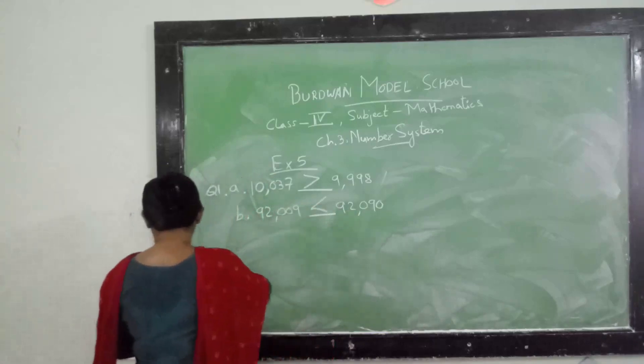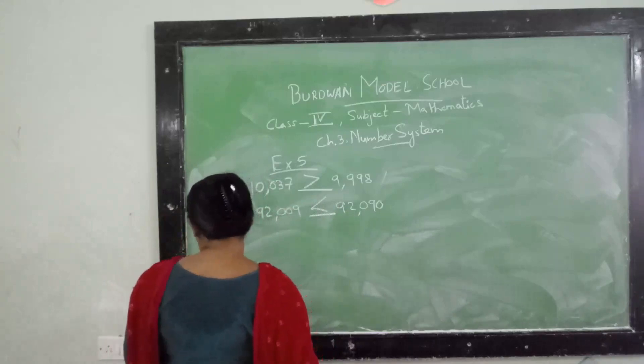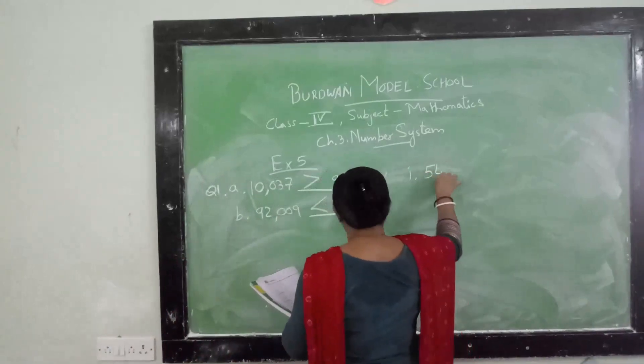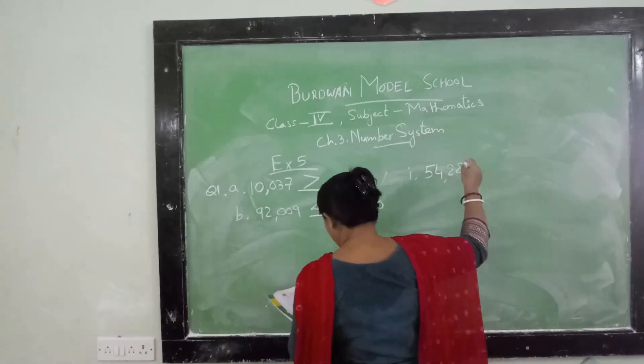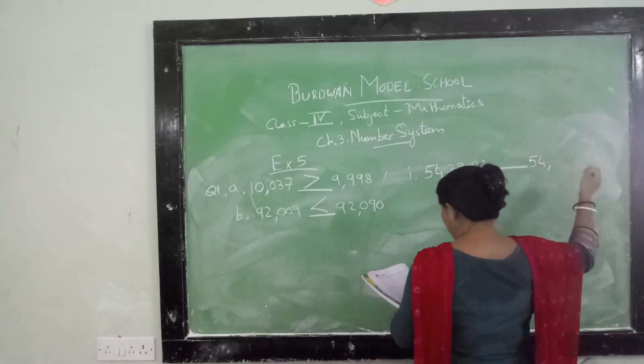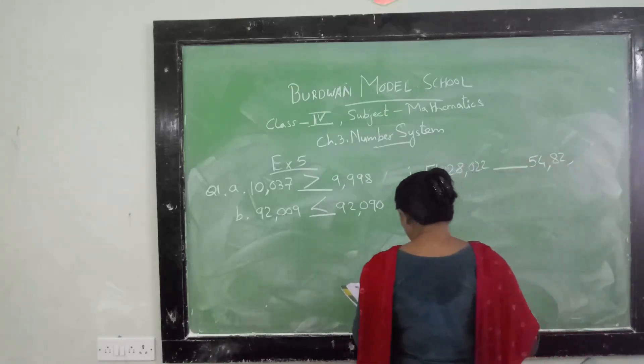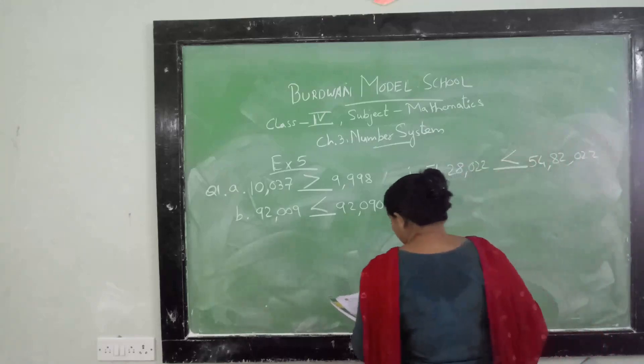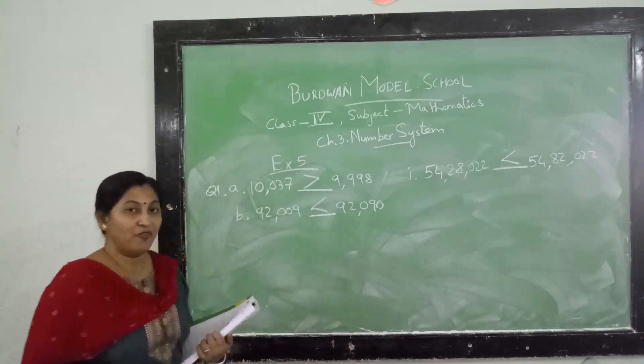Similarly, if I am doing number i, it is 54 lakhs 28 thousand 22, and the next one is 54 lakhs 82 thousand. Here it is 28, here it is 82. That means the difference is here - 28 and 82. So naturally this will be the less than sign. This is all about less than, greater than sign. The rest of the questions you will try on your own.